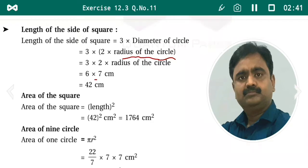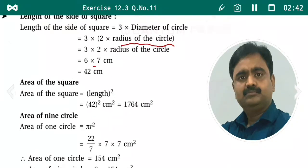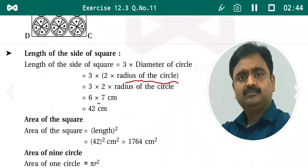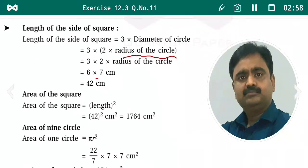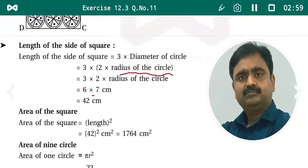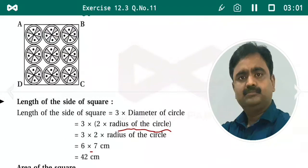Now we find the area of the square. Area of square equals the square of the length of the side, which is 42 centimeter squared. That is 42 × 42 = 1764 centimeter square. Now we need to find the area of the nine circles that we are going to exclude from this handkerchief.